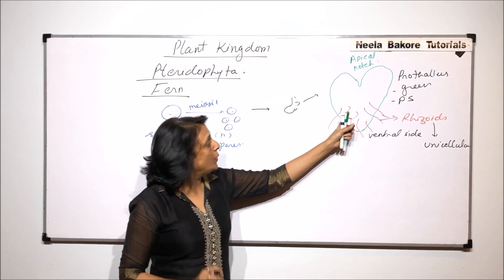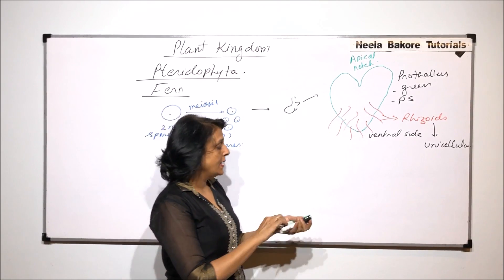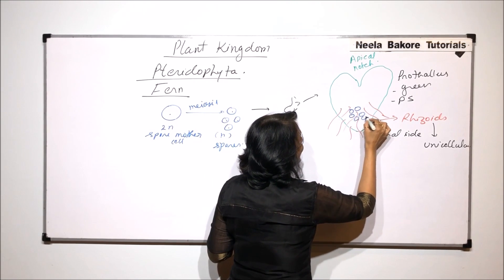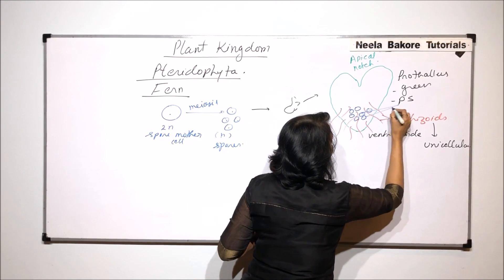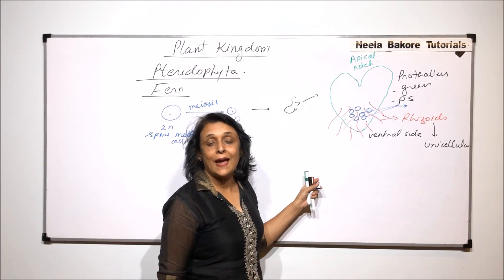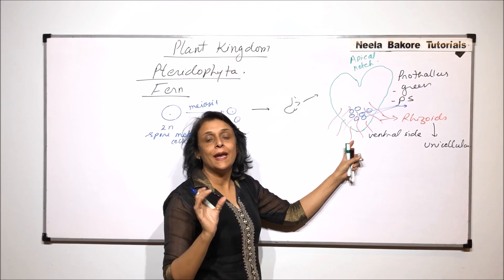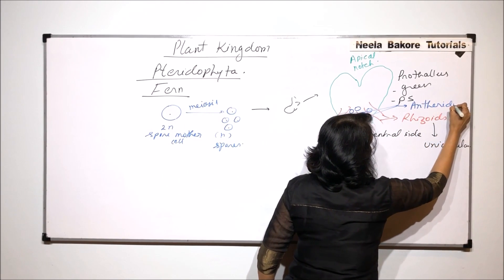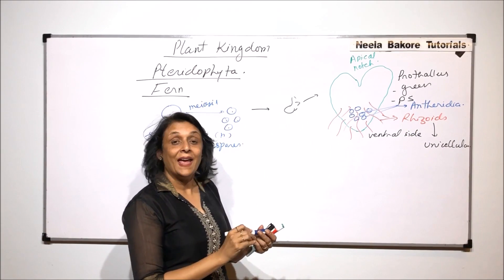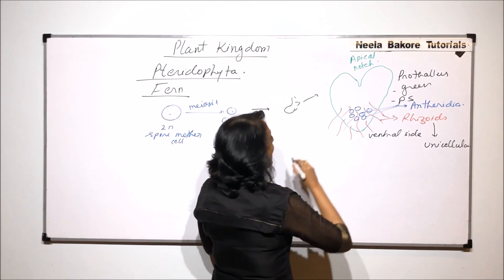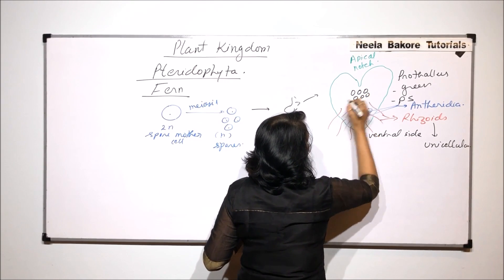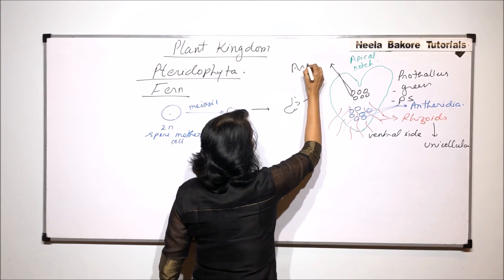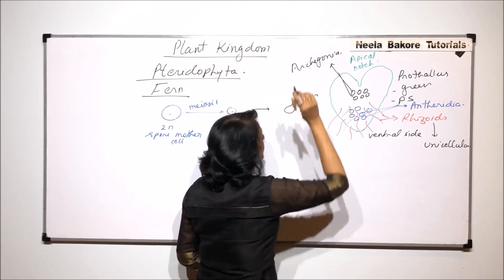Now between these rhizoids, we find that there are the male sex organs which are called the antheridia. These antheridia are in between the rhizoids and they are towards the tapering end of the prothallus. And towards the apical notch are present the archegonia, which are the female sex organs.